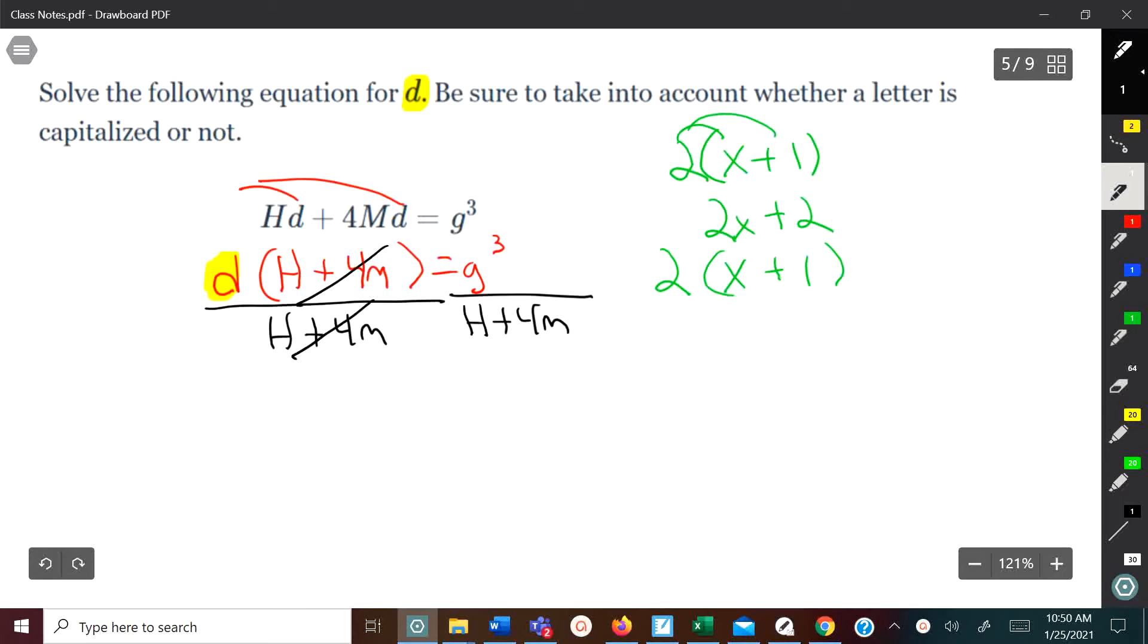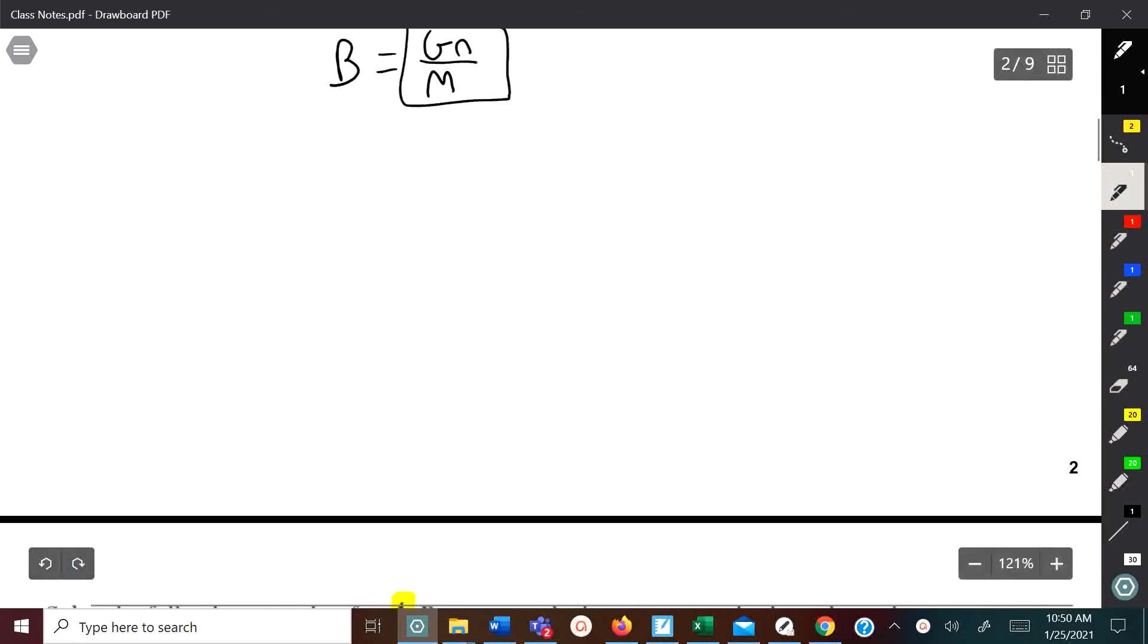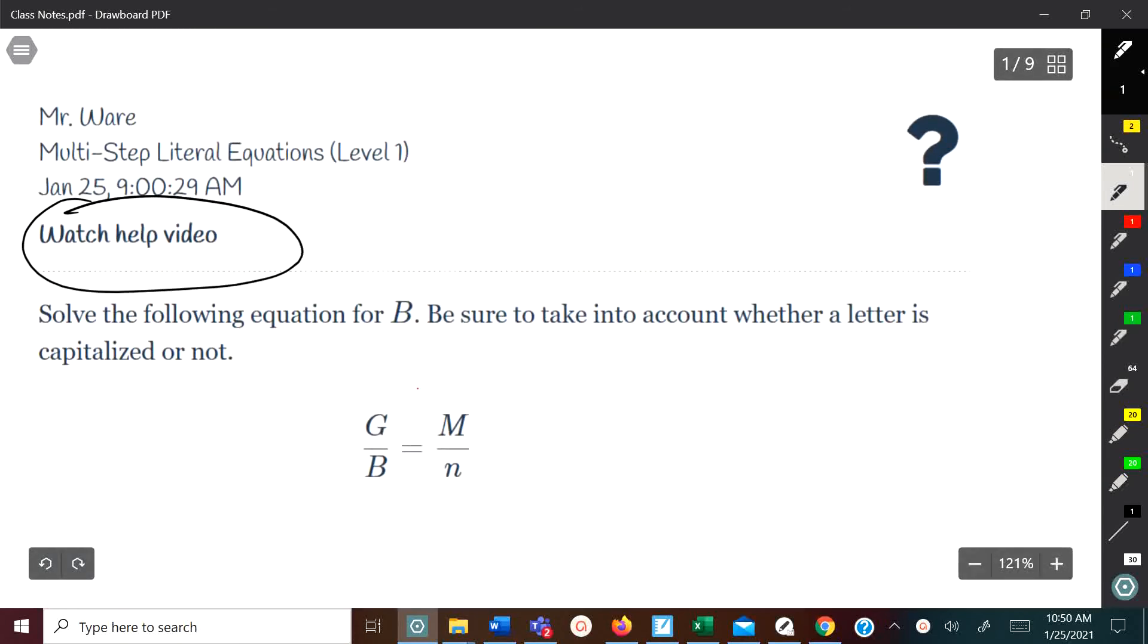And this cancels out, leaving D. And all of that is equal to G cubed over H plus 4M in parentheses. And that's it. And that's four of them. I don't know if there's any more different types you would come across. But there's always the video here that you can watch to get extra help and some example problems there. But again, I want to thank you for checking out Mr. Ware's videos. Have a nice day.